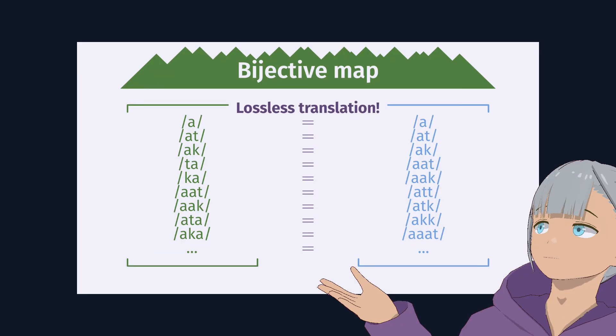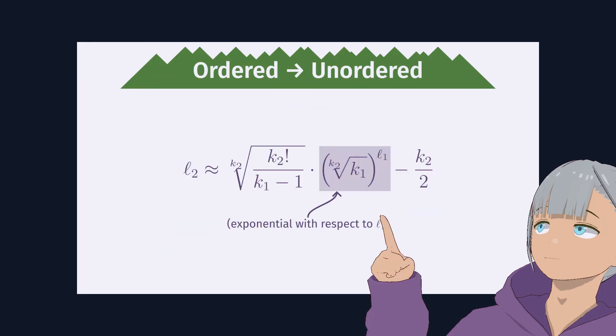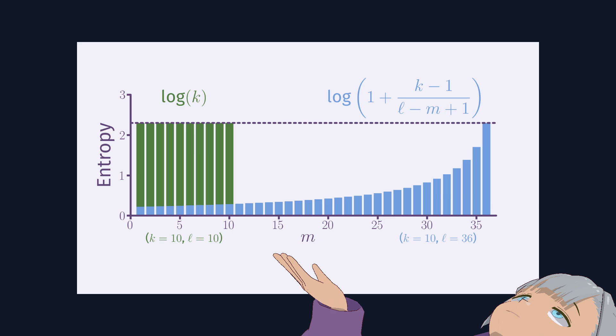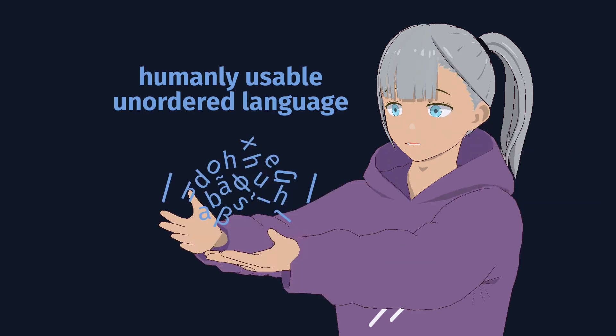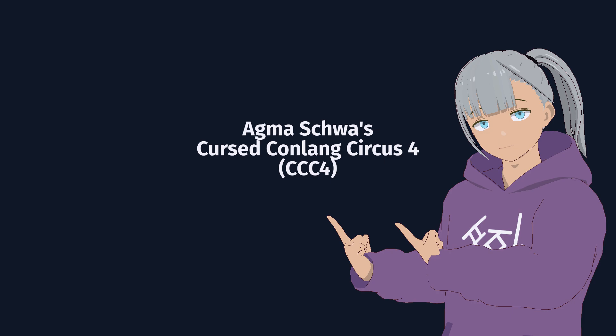So what have we seen? We've proven that unordered languages are possible, that they grow exponentially long compared to ordered utterances, and we've looked at how information is distributed differently in unordered versus ordered utterances. But can we actually make one — is there a way to construct a humanly usable unordered language? I'll be exploring that in my next video, where I'll construct such a language as a submission for Agma Schwa's 4th Cursed Conlang Circus. See ya!